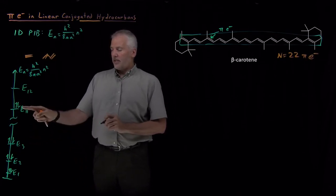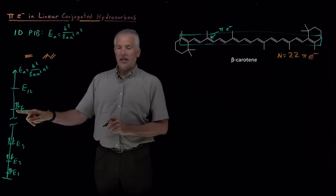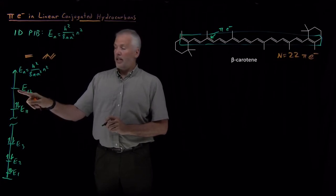So that's what we predict, is the lowest 11 energy levels will be full. The 11th energy level is the highest occupied orbital, the HOMO. E12 is the lowest unoccupied level, the LUMO.